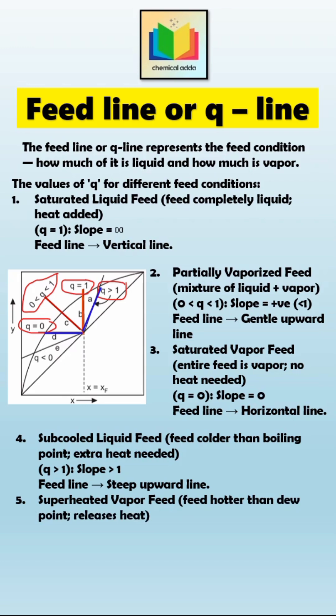Finally, if the feed is a superheated vapor, that means it's hotter than its dew point, so instead of absorbing heat, it actually releases heat to the column. In this case, Q is less than 0, and the slope becomes negative, so the Q line slopes downward.